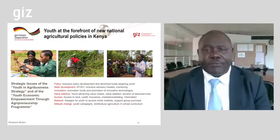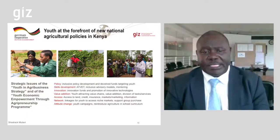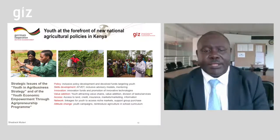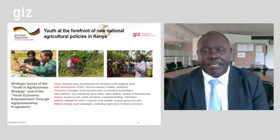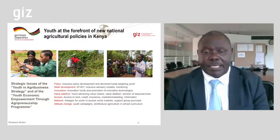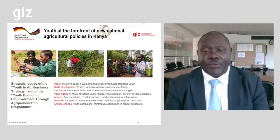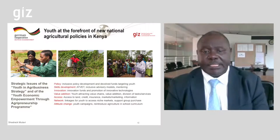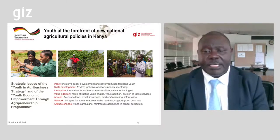Youth have also been at the forefront of national policies and strategies. Two key ones are the Youth in Agribusiness Strategy and the Youth Economic Empowerment through Agribusiness Program. Key areas through which youth can participate have been identified: youth can participate in policy processes so that their issues are taken into account; skills development to have adequate models for mentoring of youth; innovation so that youth can utilize innovative technologies; and value addition, which is where youth like to participate — adding value to agricultural products, which can provide jobs.